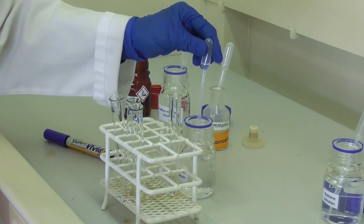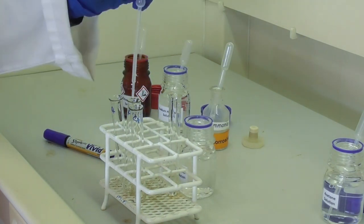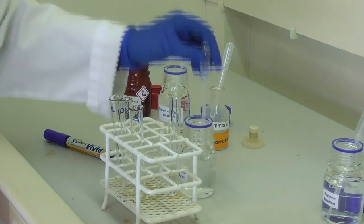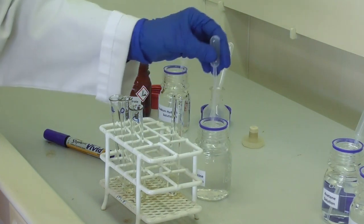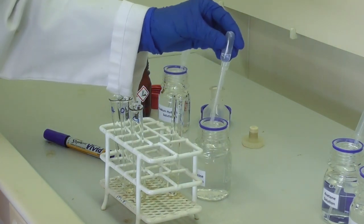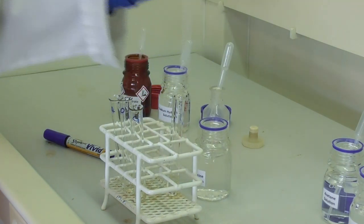To the second test tube, we add one milliliter of propanol. To the third test tube, we add one milliliter of glucose.